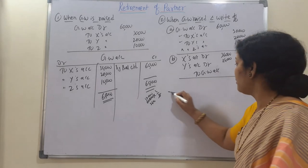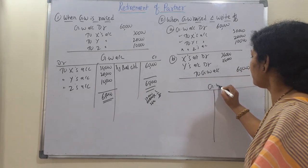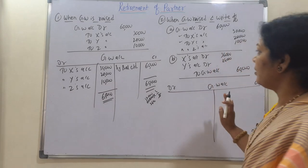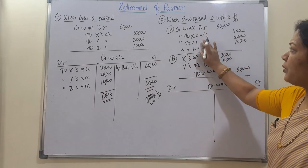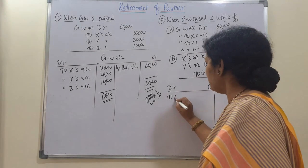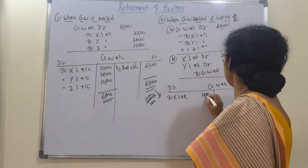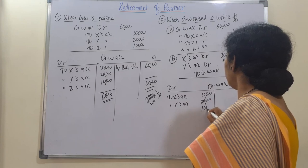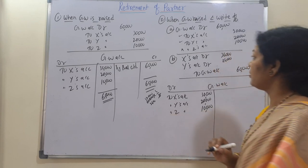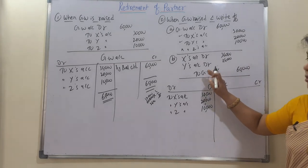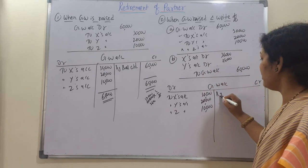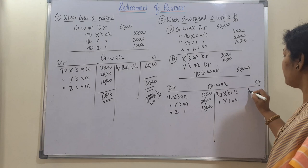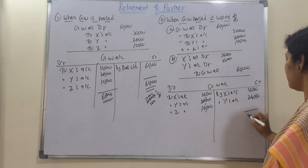Now we show the goodwill account for this case. Debit side: to X's Account 30,000, to Y's Account 20,000, to Z's Account 10,000. Credit side: by X's Account 36,000 and by Y's Account 24,000. Both sides total 60,000 and the account balances — goodwill is fully written off.